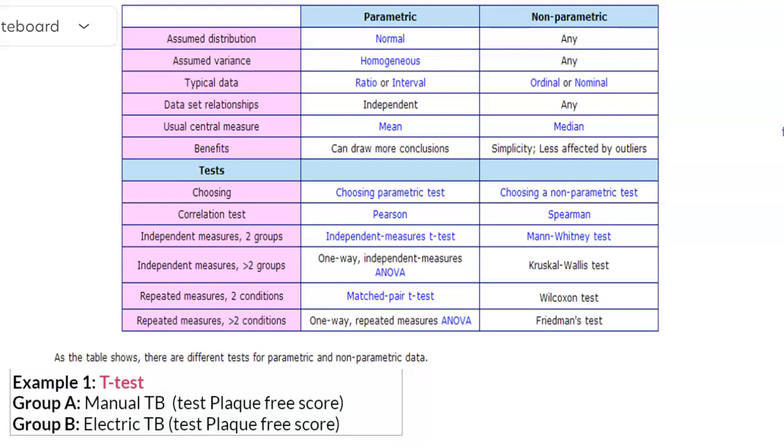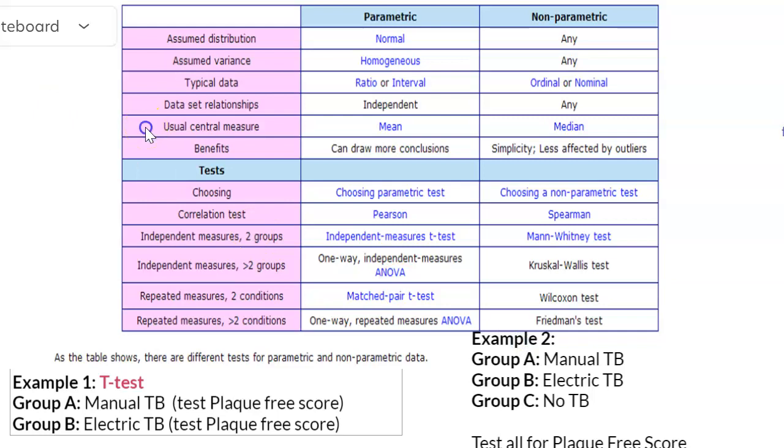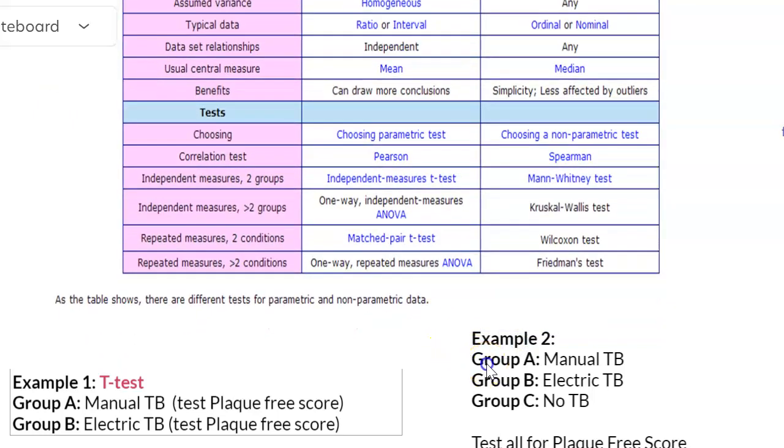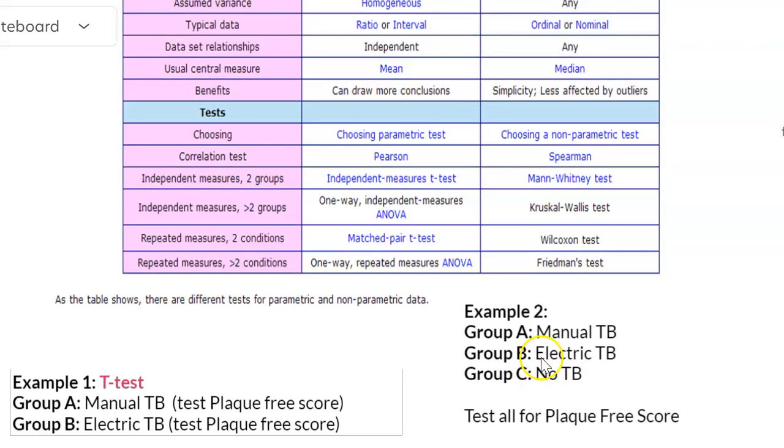Let's look at example two. So example two, I'll bring this up a little bit, is we have three groups. Group A, manual toothbrush. Group B, electric toothbrush. Group C, no toothbrush. And I ask all these people in the group to go brush for one week. Come back in one week and I want to test all of their plaque-free score.